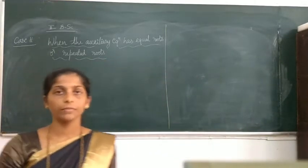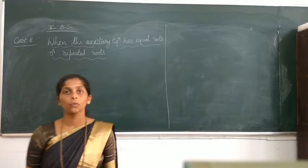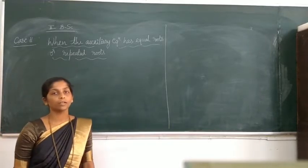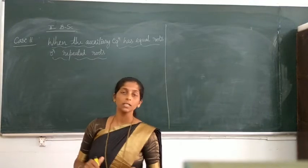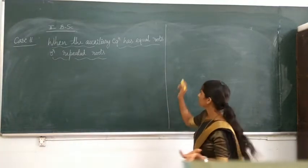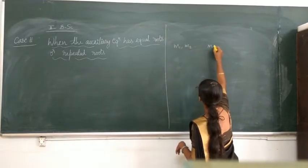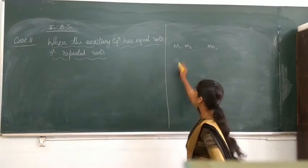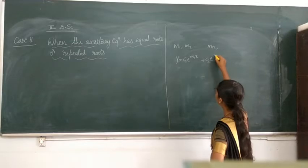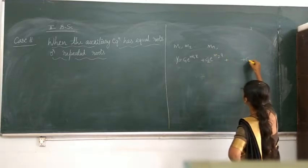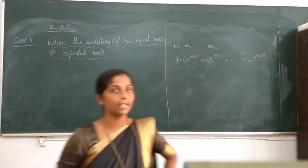Dear students, in the previous class we were discussing the complementary function of a linear differential equation with constant coefficients. We were finding the complementary function when the auxiliary equation has n distinct roots. If an auxiliary equation has n distinct roots m1, m2, up to mn, then the complementary function can be written as y = c1·e^(m1·x) + c2·e^(m2·x) + ... + cn·e^(mn·x), where c1, c2, up to cn are arbitrary constants.